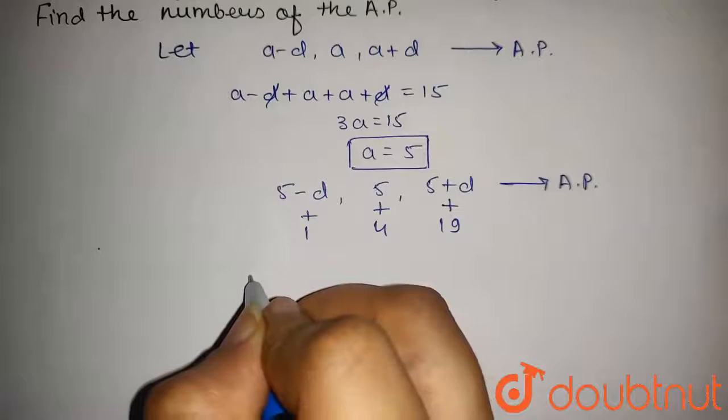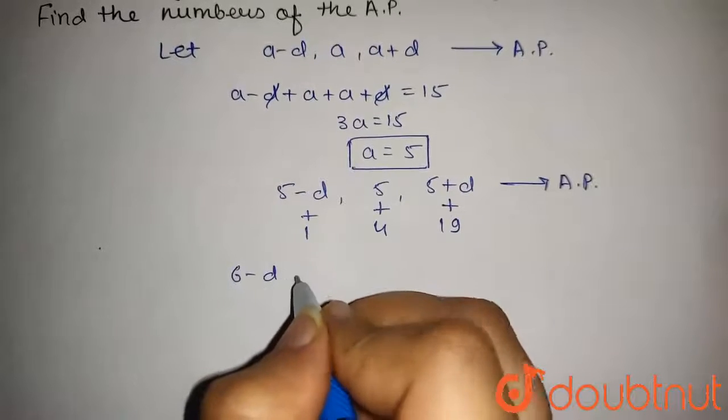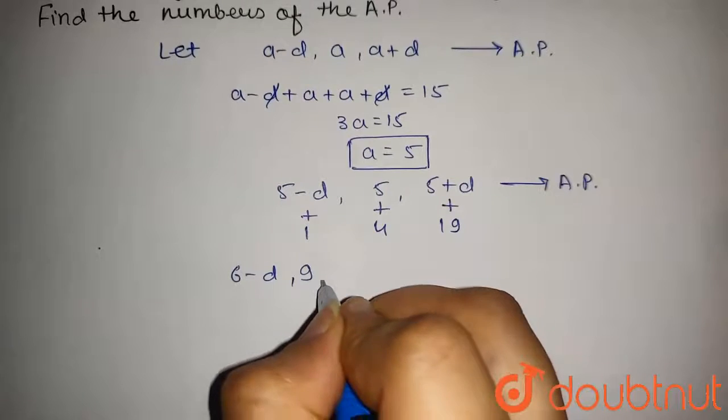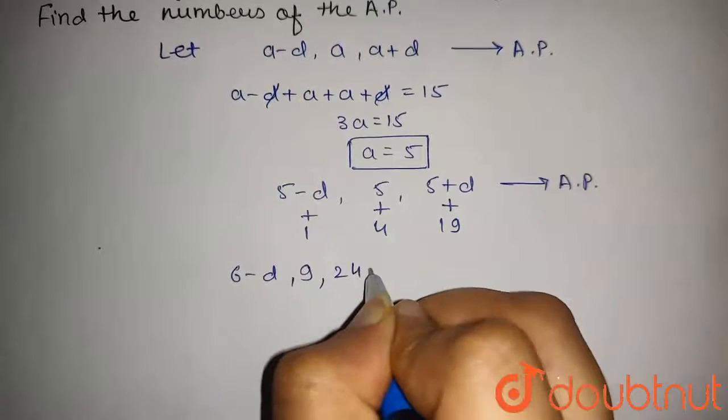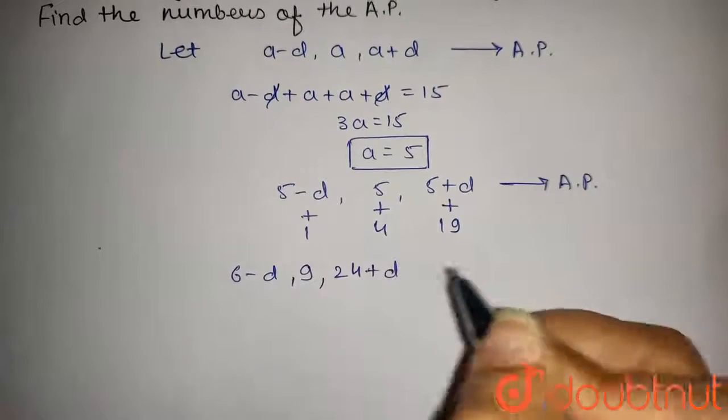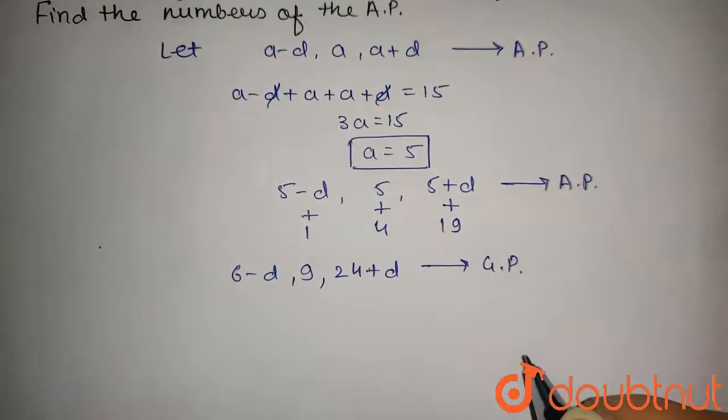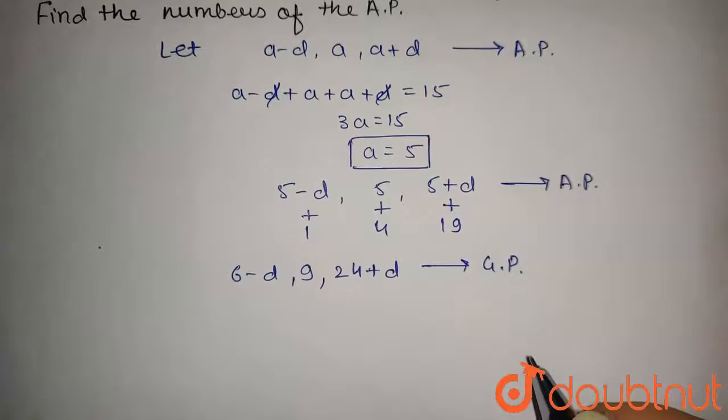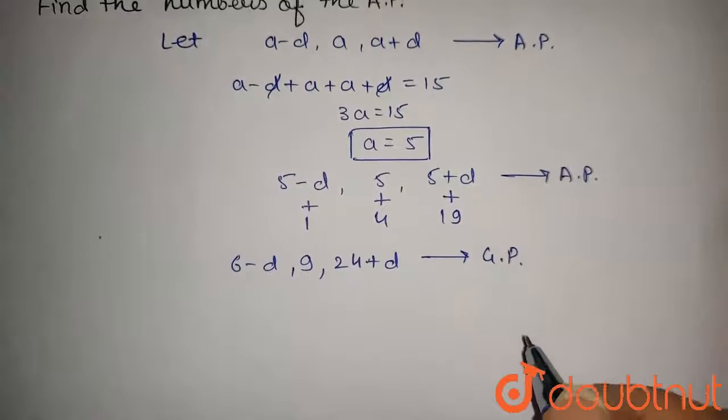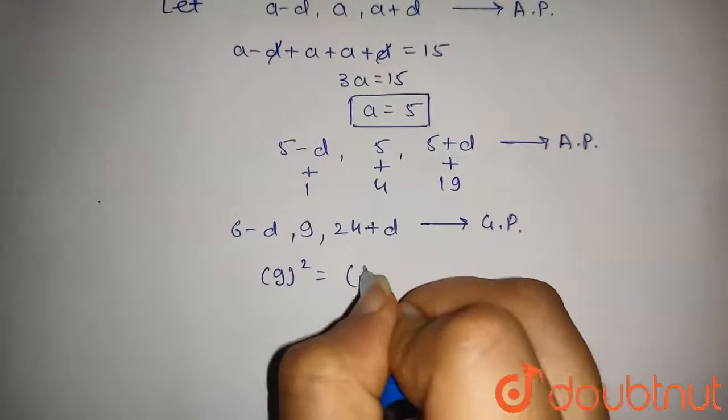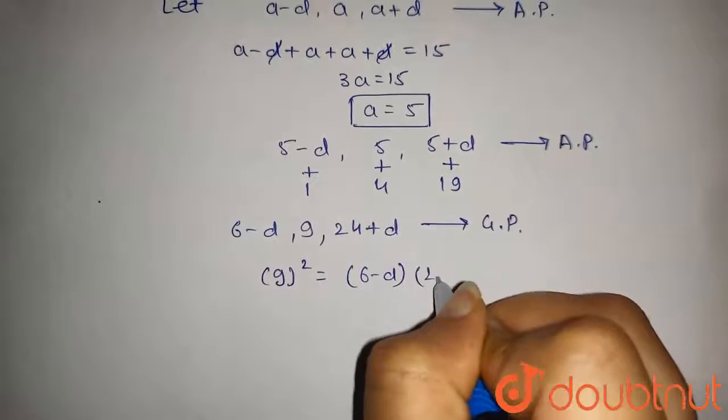This will be 6-D, 9, 24 plus D. This will be in GP. As these are in GP, we can write square of middle term will be equal to product of other two terms. So 9 square will be equal to 6-D into 24 plus D.